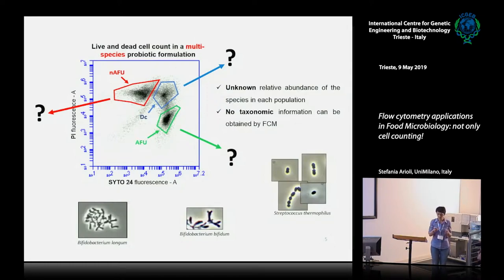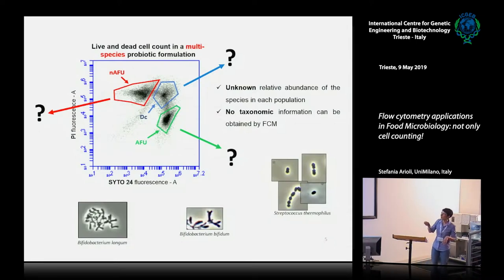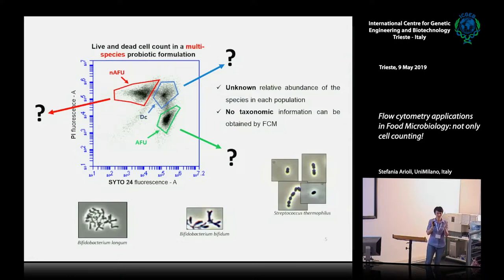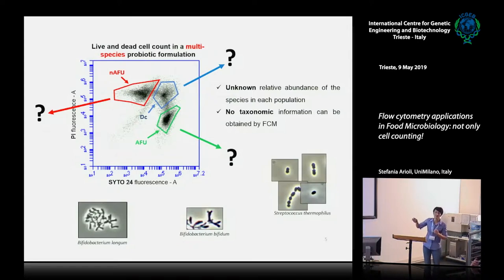We are in the presence of seven different species, so I cannot say to which species each dot corresponds. We do not have the relative abundance of each species within each of the three gates. The flow cytometer is not a taxonomic approach — I can assess and count cells, but I cannot give a name to each event.